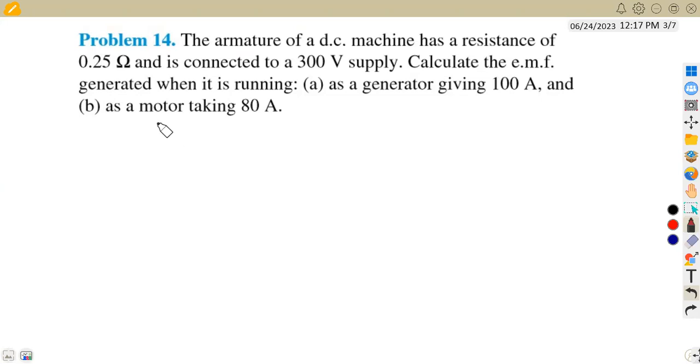We are given a question whereby the armature of a DC machine has a resistance of 0.25Ω and is connected to a 300 volt supply. Calculate the EMF generated when it is running.